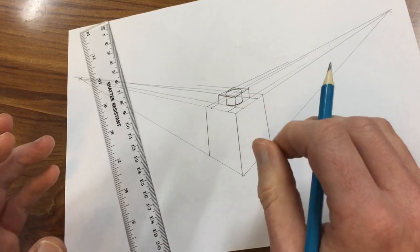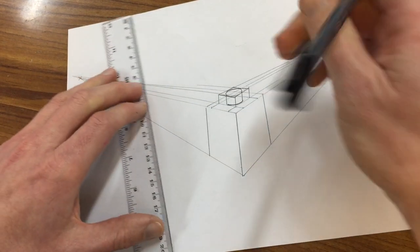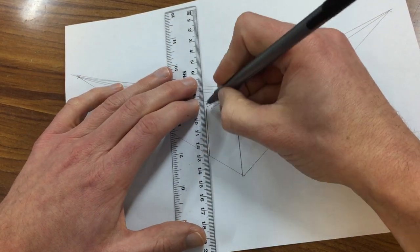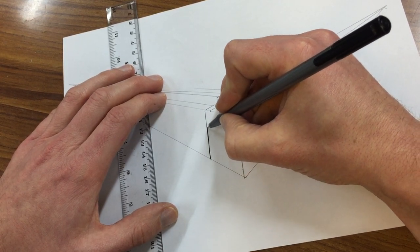Right, now I'm ready to go over in pen as long as I'm happy with it and then erase my guidelines. So I'm gonna use—you could go over with a ruler, but you can smudge the pen, so I'm just going to go freehand, nice and steady.